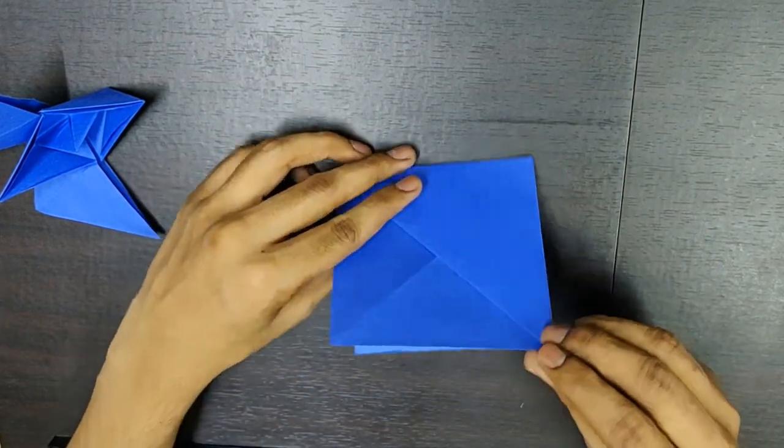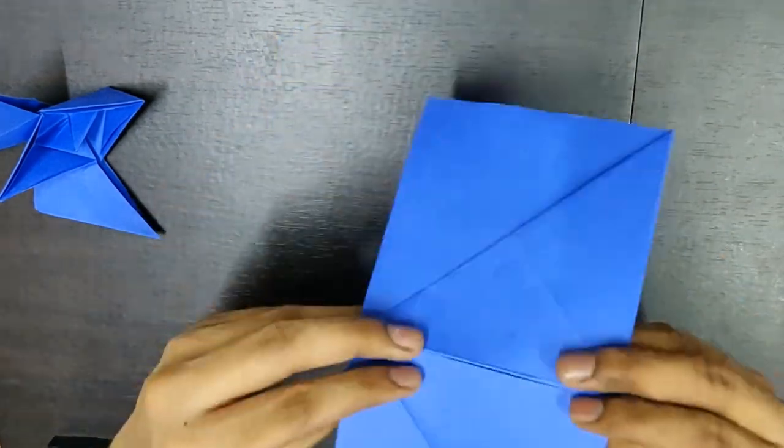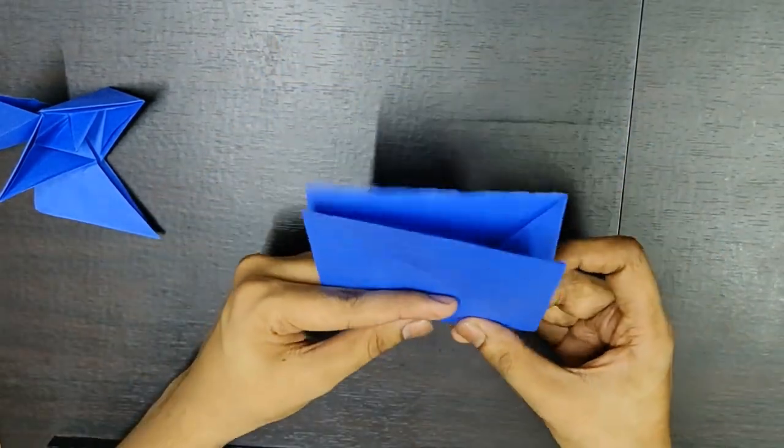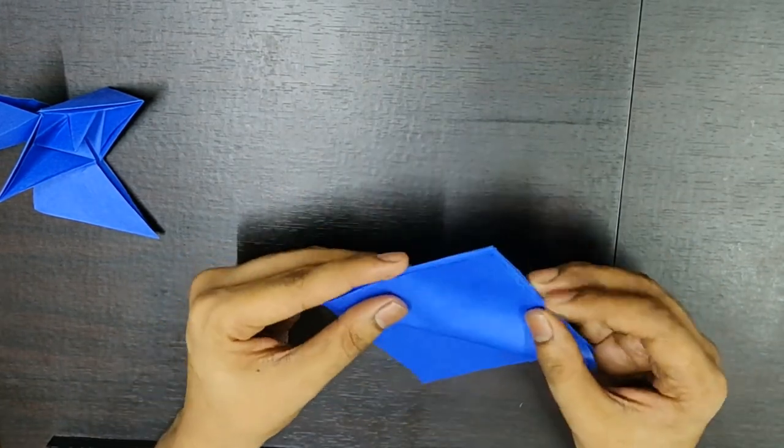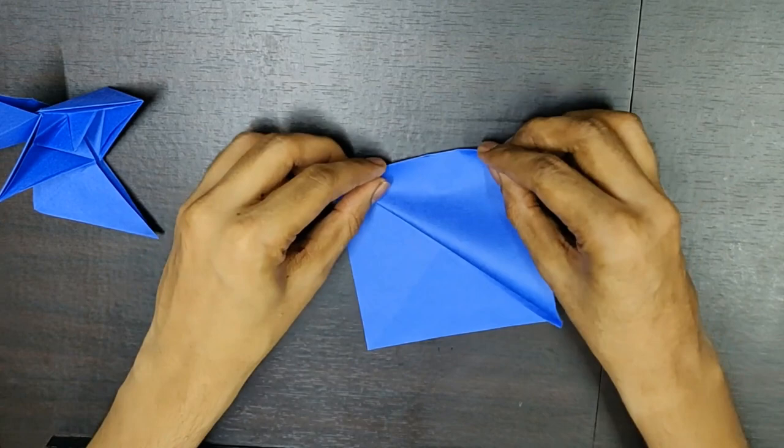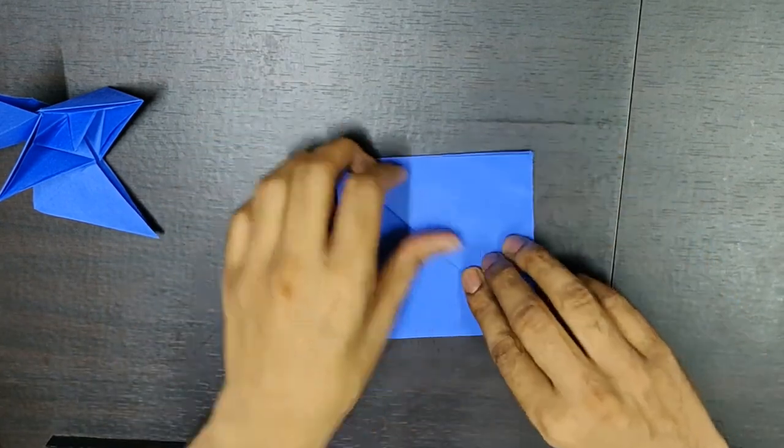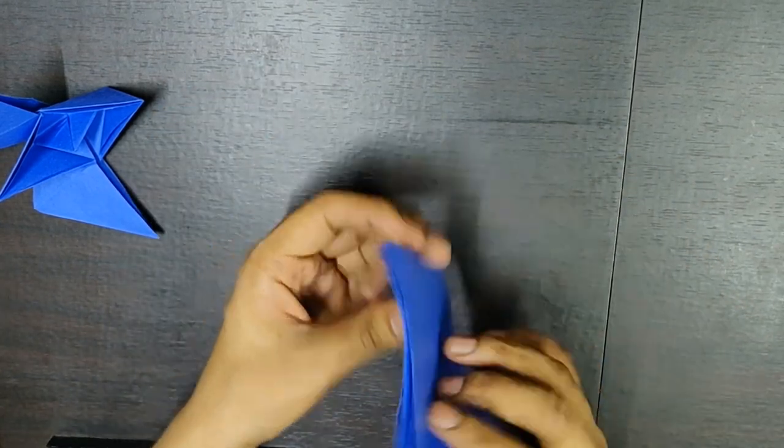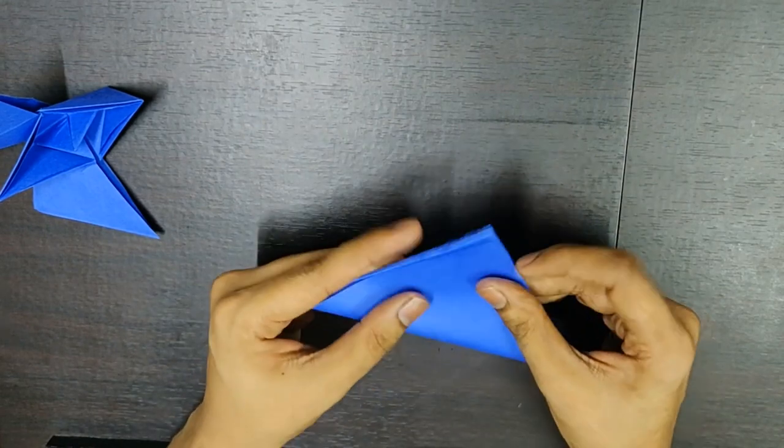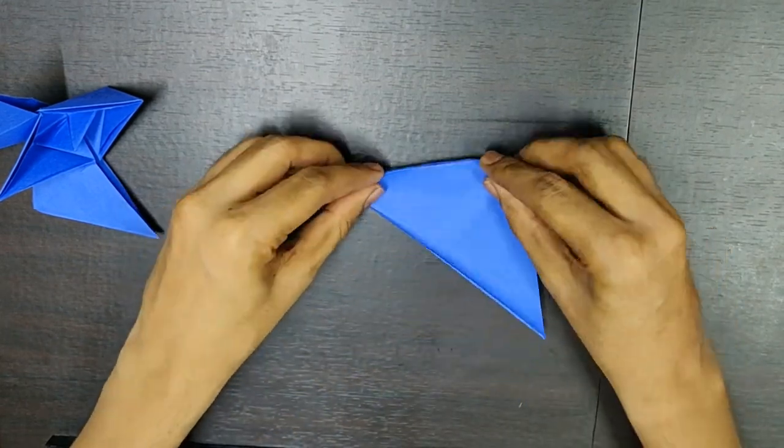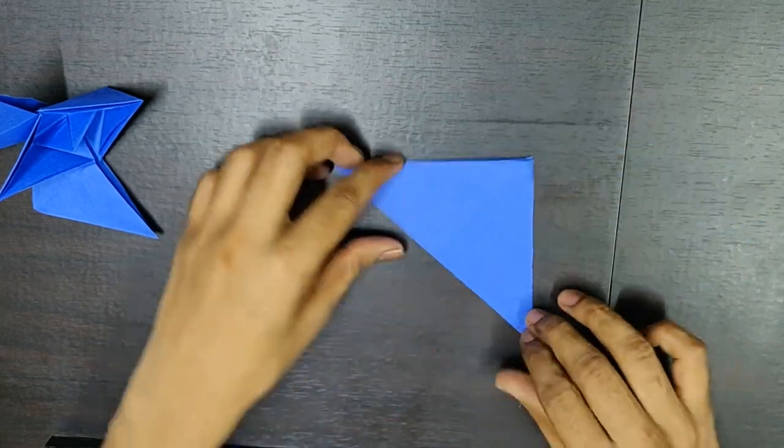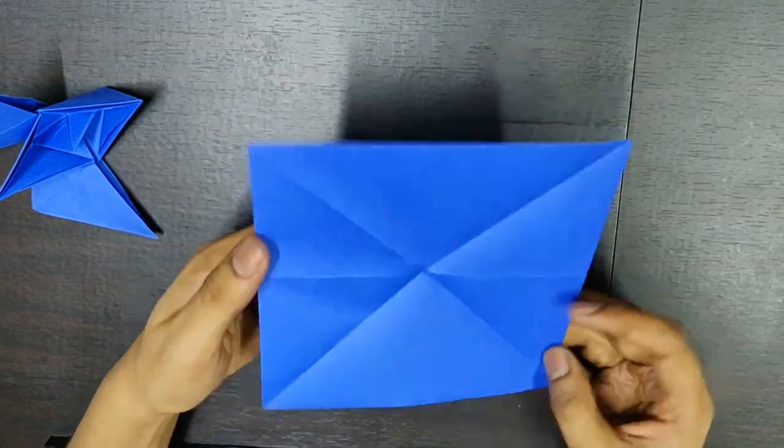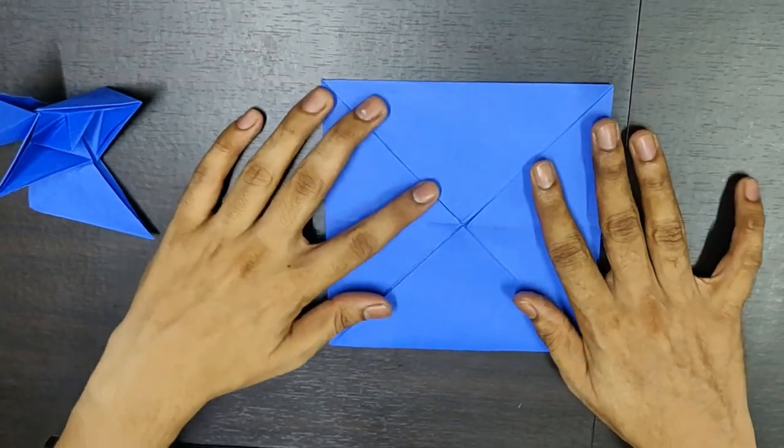Now, you need to open it up like this and fold it inwards. You'll have remaining two flaps. One, you need to fold it on this side. Basically, it forms a triangle like this. Now, you need to open this triangle. You can see something like this.